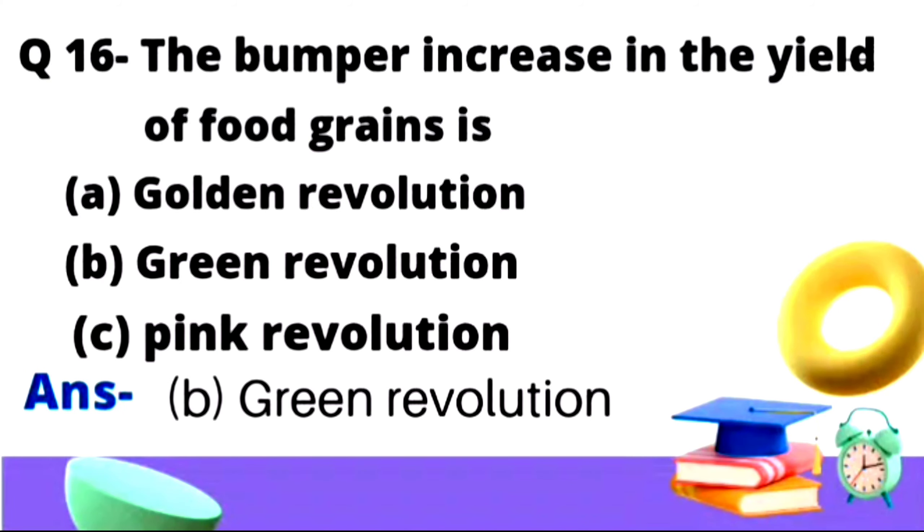Question number 16: The bumper increase in the yield of food grains. Option A is golden revolution, option B is green revolution, and option C is pink revolution. Here we have asked about the bumper increase in production of food grains, so what is this revolution called? The right answer is green revolution, that is option number B.